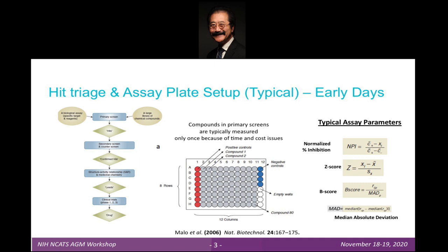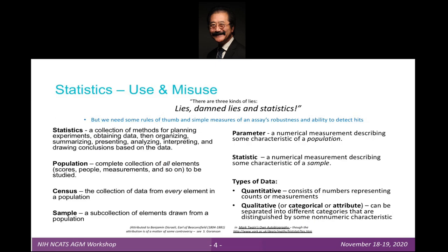While you can get really complex statistics with all these mathematical formulas, what you really need are some simple rules of thumb and simple measures to make sure the assay is robust and you can really detect hits. Statistics itself is a collection of methods for organizing, obtaining, summarizing, and interpreting data so you can draw conclusions. Within statistics, you study populations — a complete collection of all elements, whether it's high-throughput screening data, people, or measurements. The census is a collection of data from every element in that population, and a sample is a sub-collection because you can't test all 500 million compounds or all the chemical structures in the world.